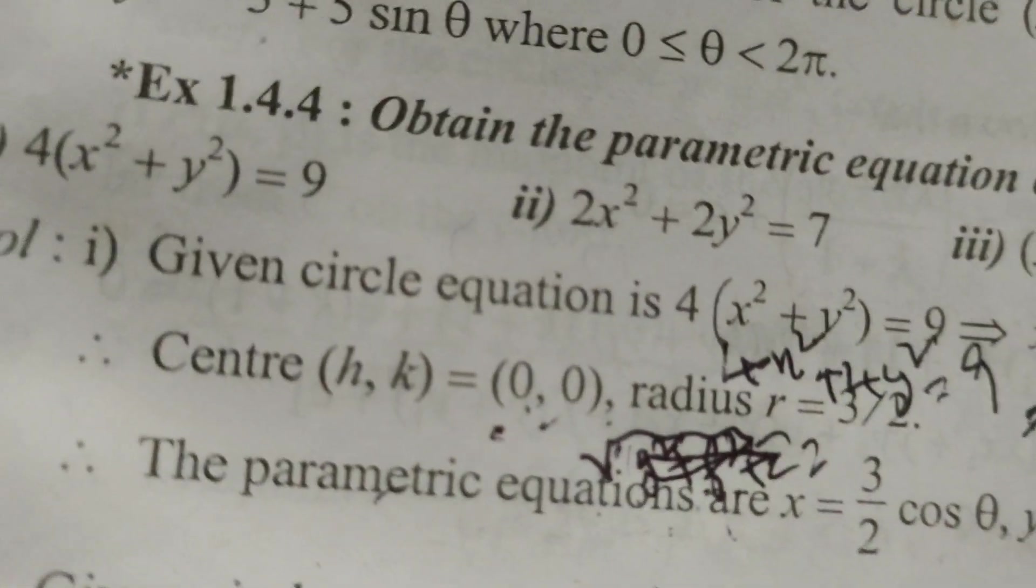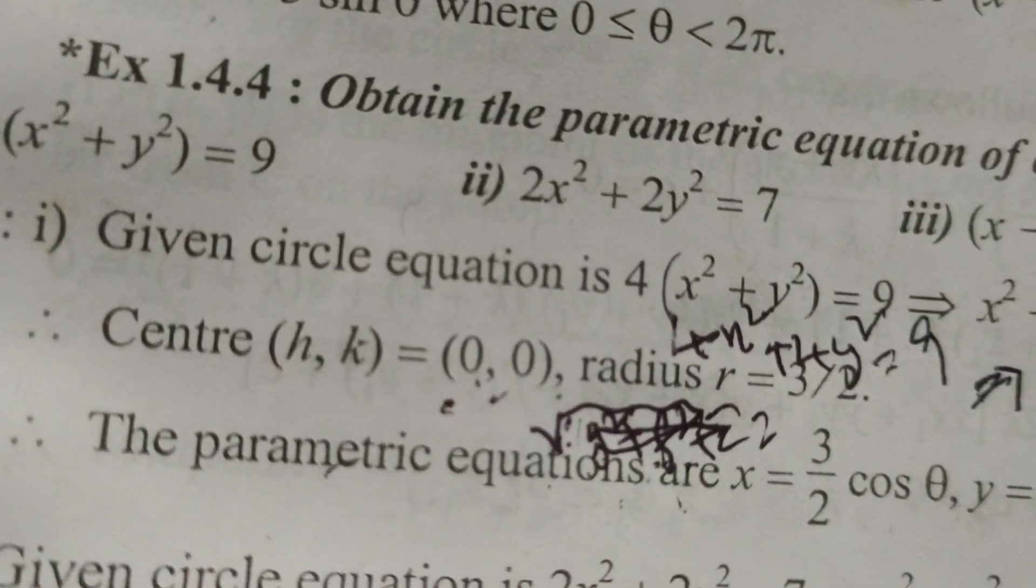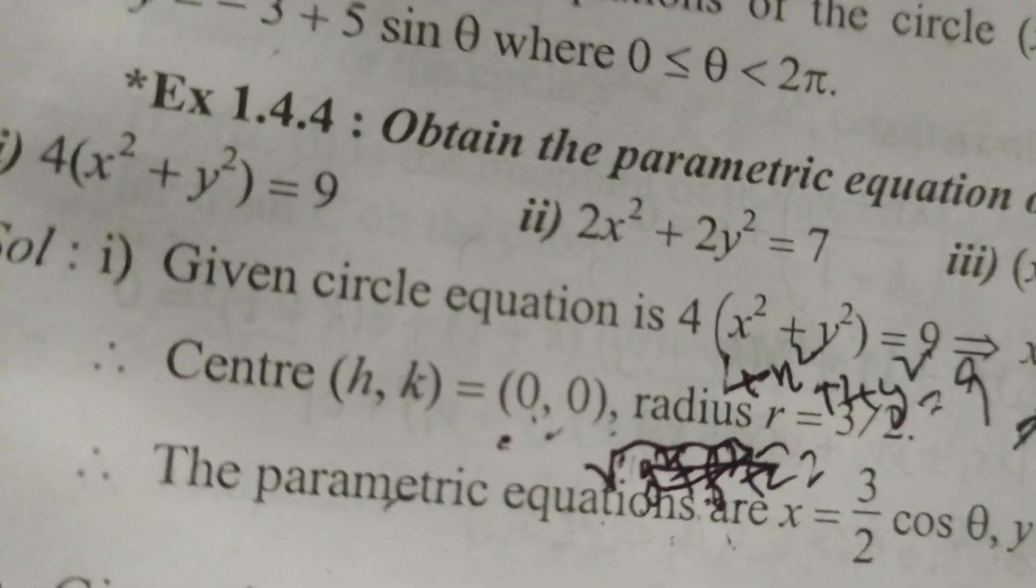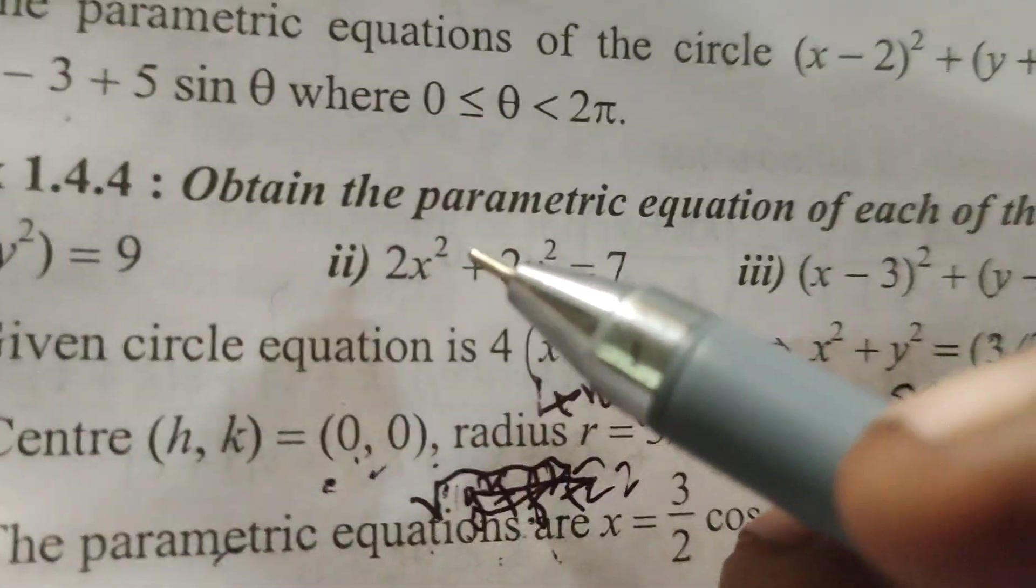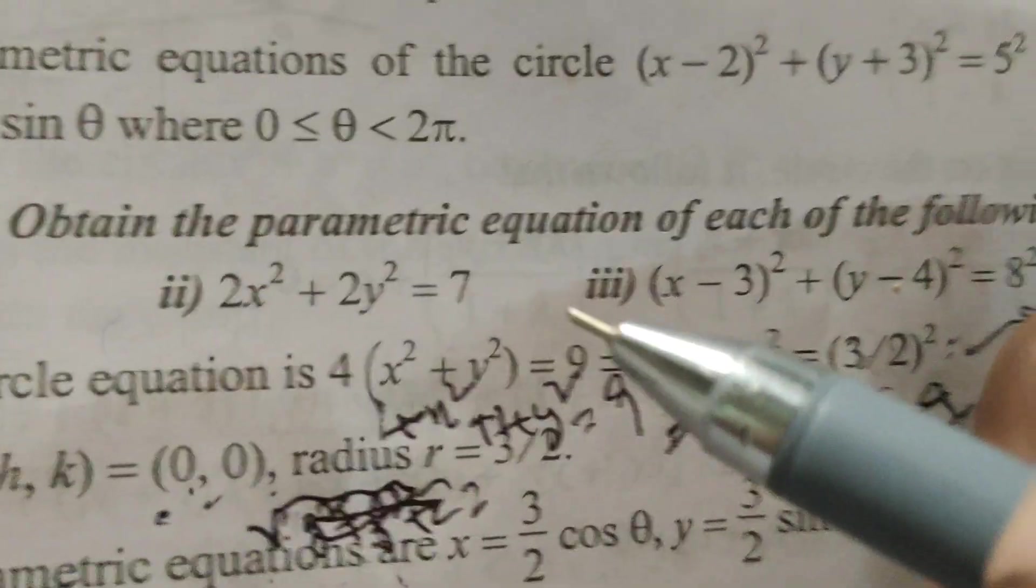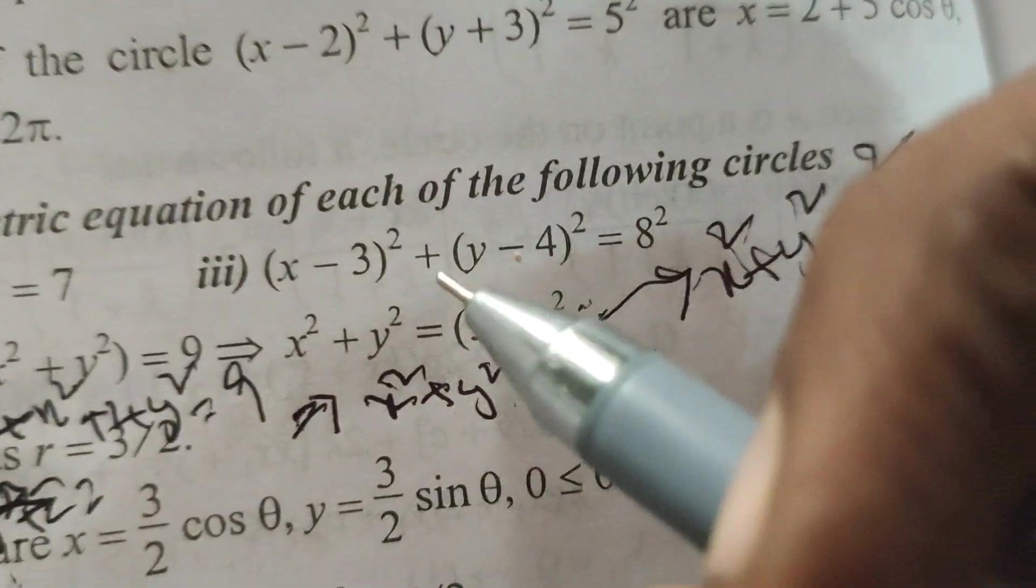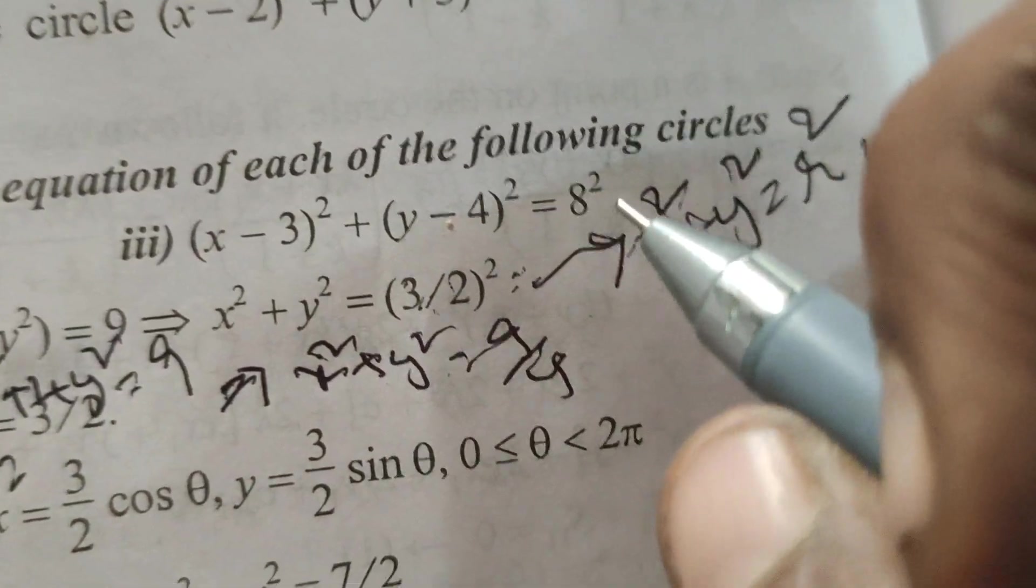This is Dr. T. Now, today we are going to explain that in this problem, find out the parametric equation of given following circular 4 into x square plus y square equals to 9.